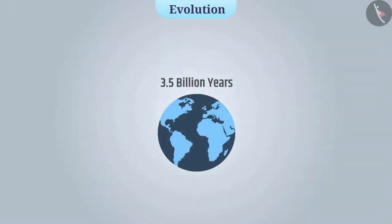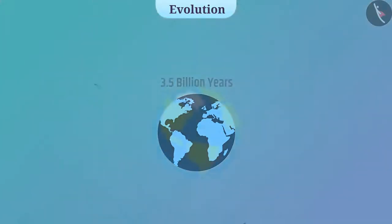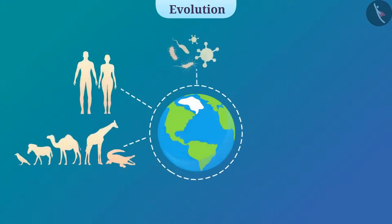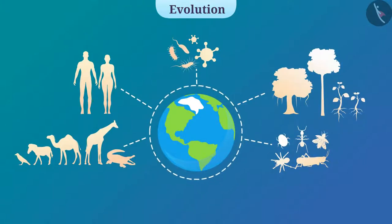Nearly 3.5 billion years ago there was no life on earth. But today we see millions of species of plants and animals on earth.